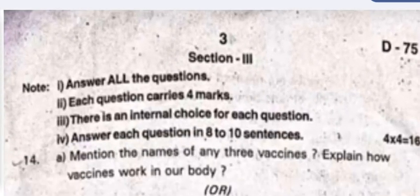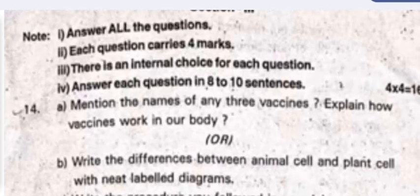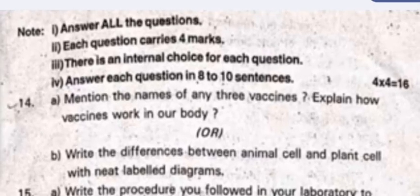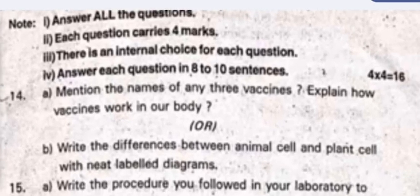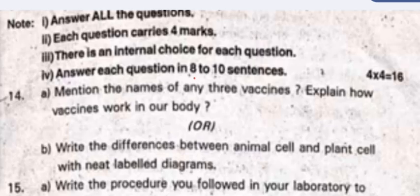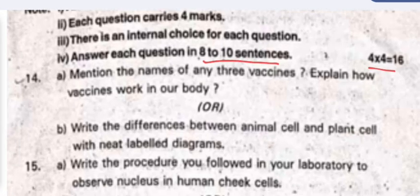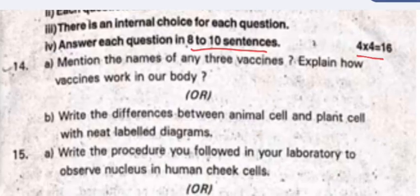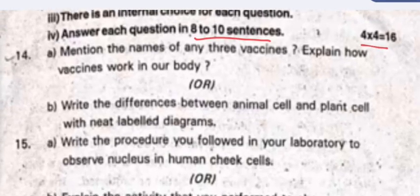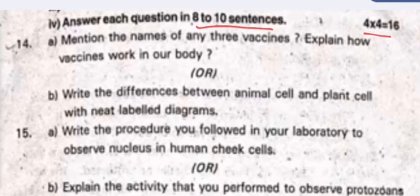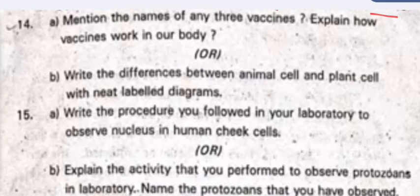Section 3 — answer all the questions; each question carries four marks, there is an internal choice for each question, and you have to answer in eight to ten sentences. Four questions times four marks equals sixteen marks. Question 14a: mention the names of any three vaccines and explain how a vaccine works in our body.